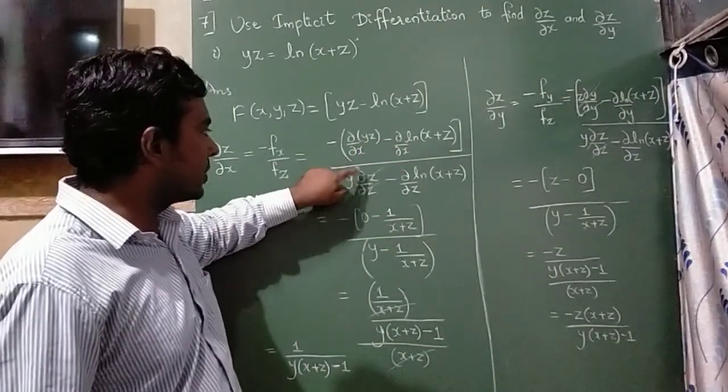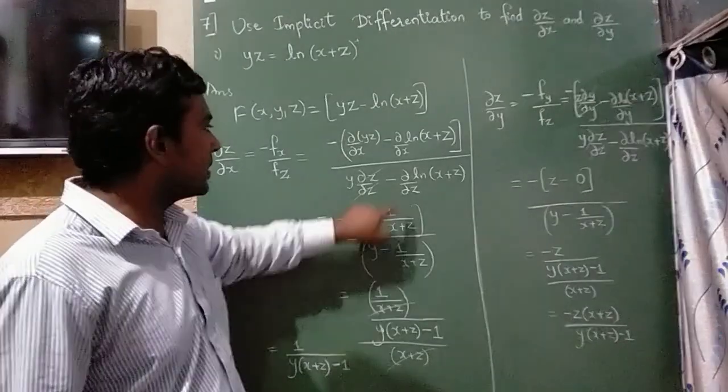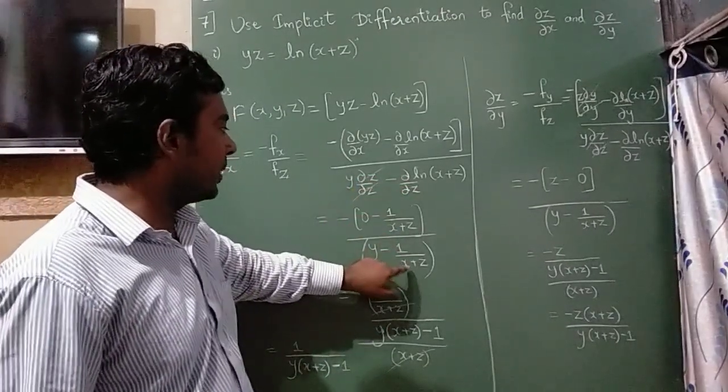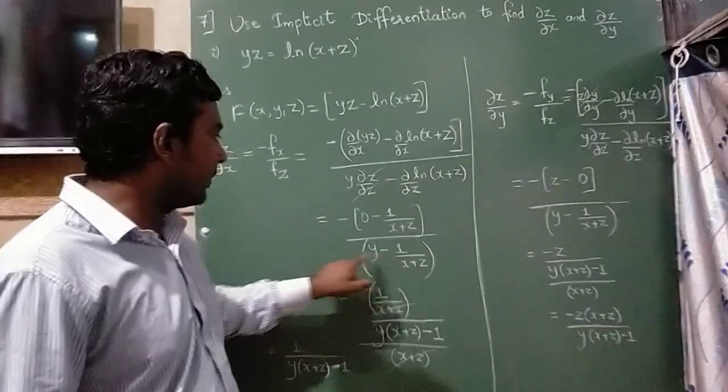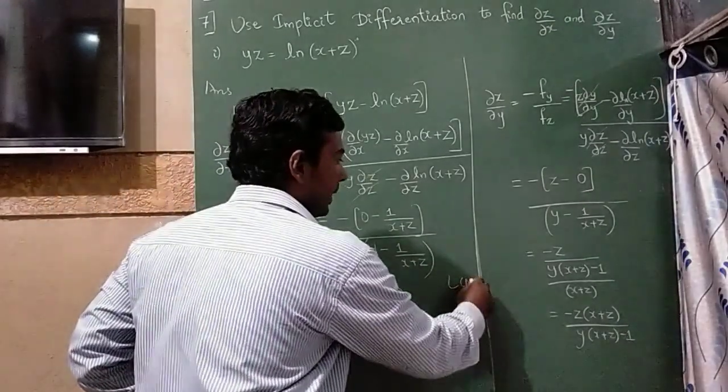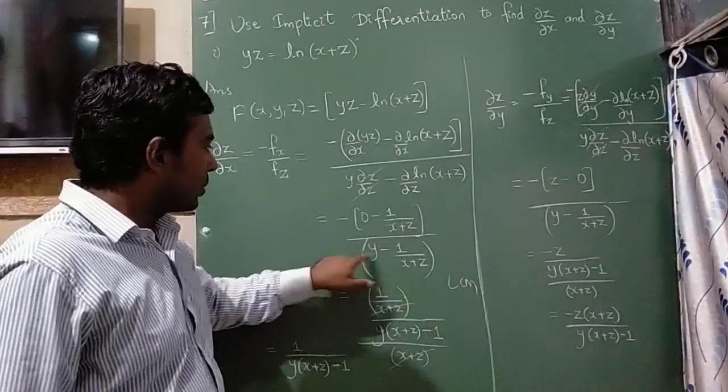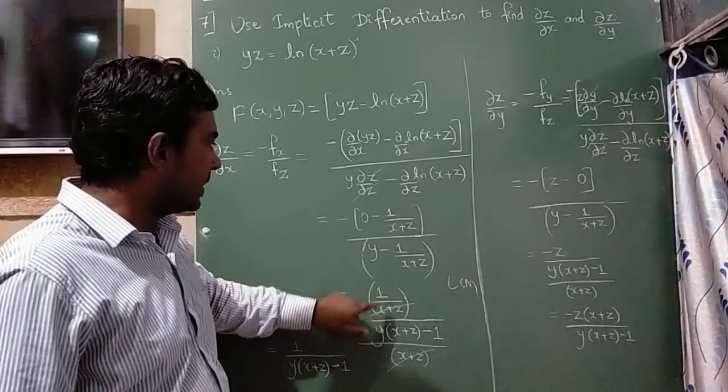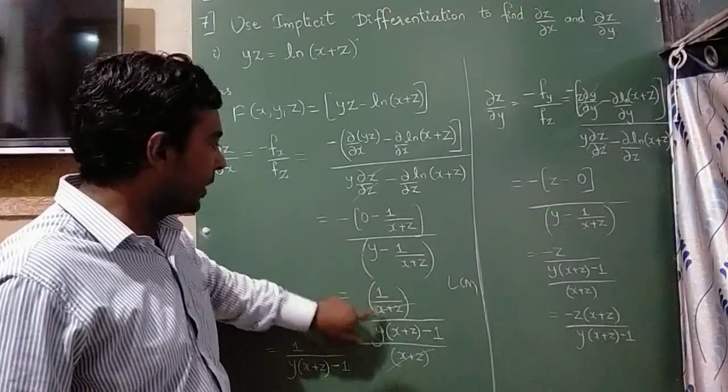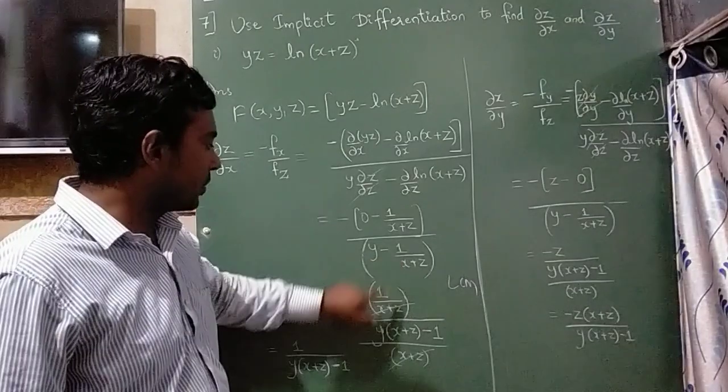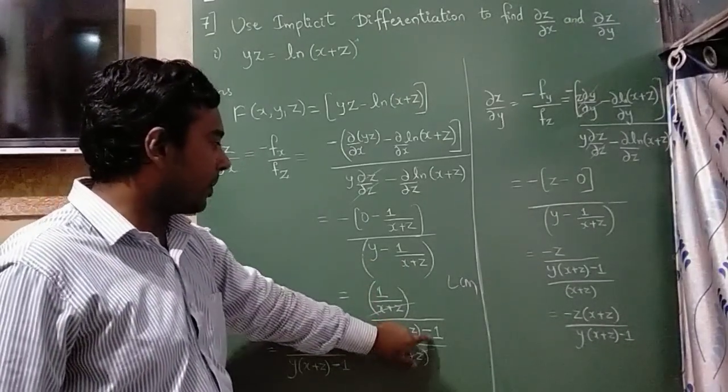Now denominator this will get cancelled, we are remained with y minus log of this is 1 divided by x plus z. I have taken LCM. So you can cross multiply this, minus into minus numerator will become positive and this will become y x plus z minus 1.